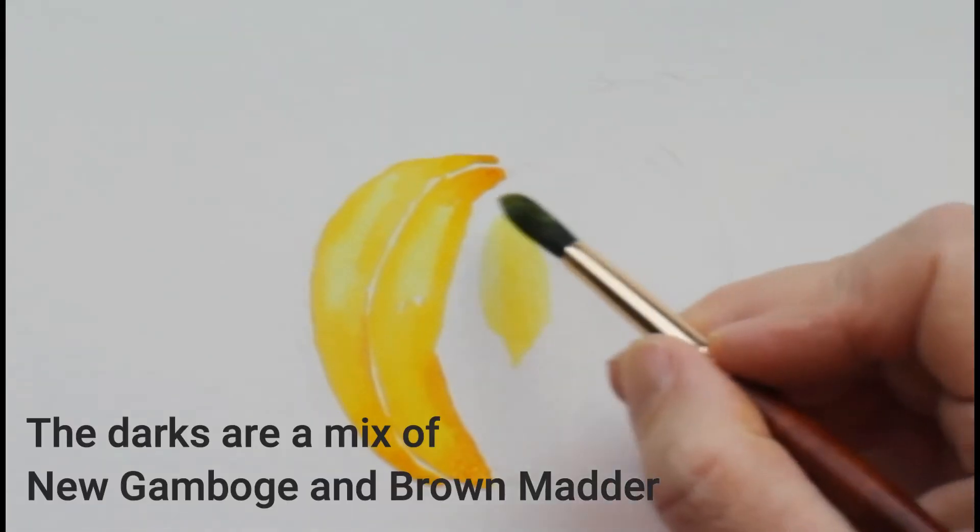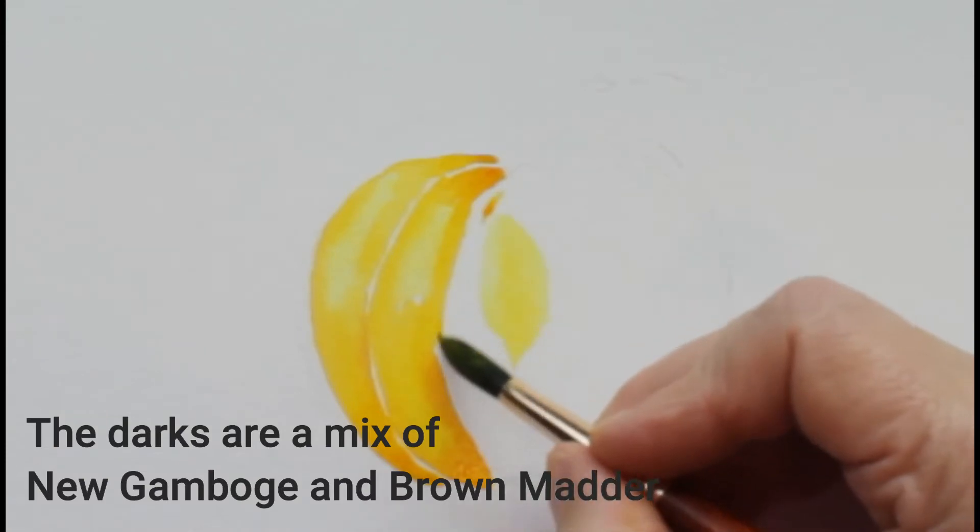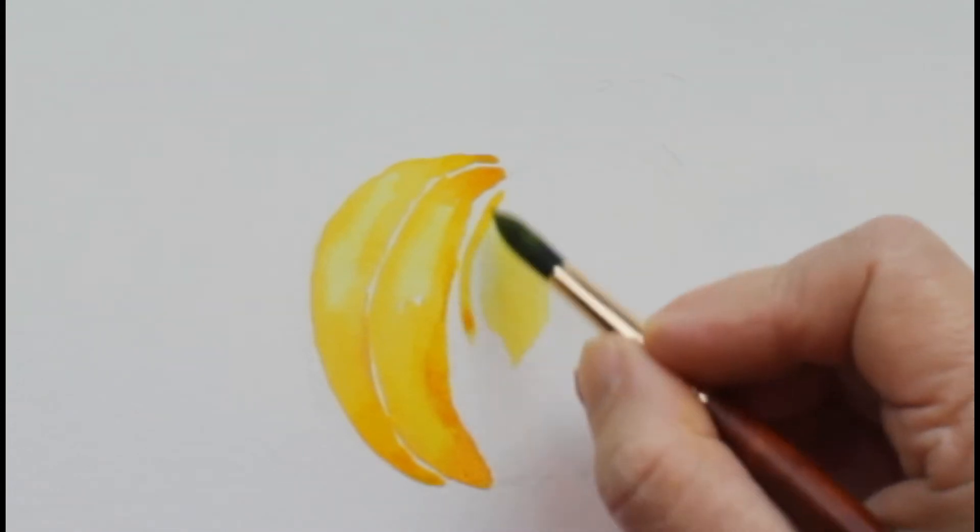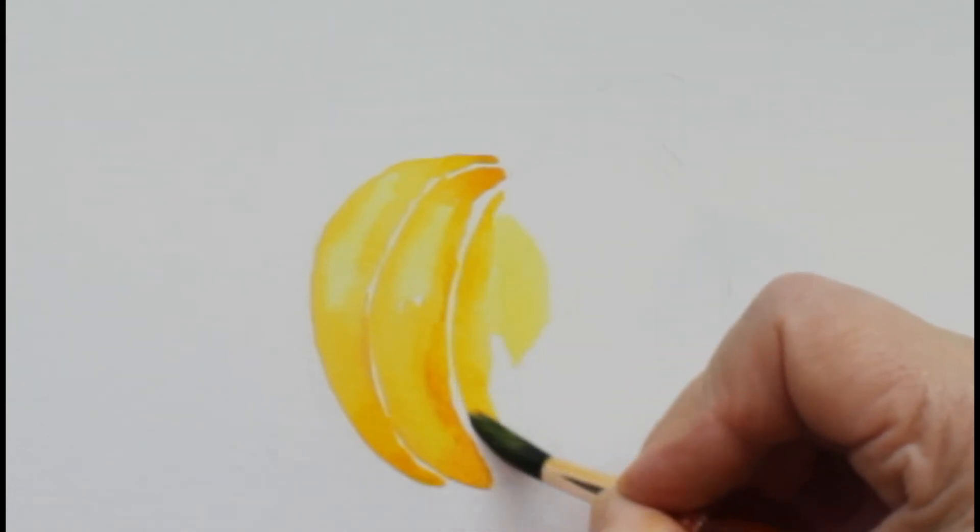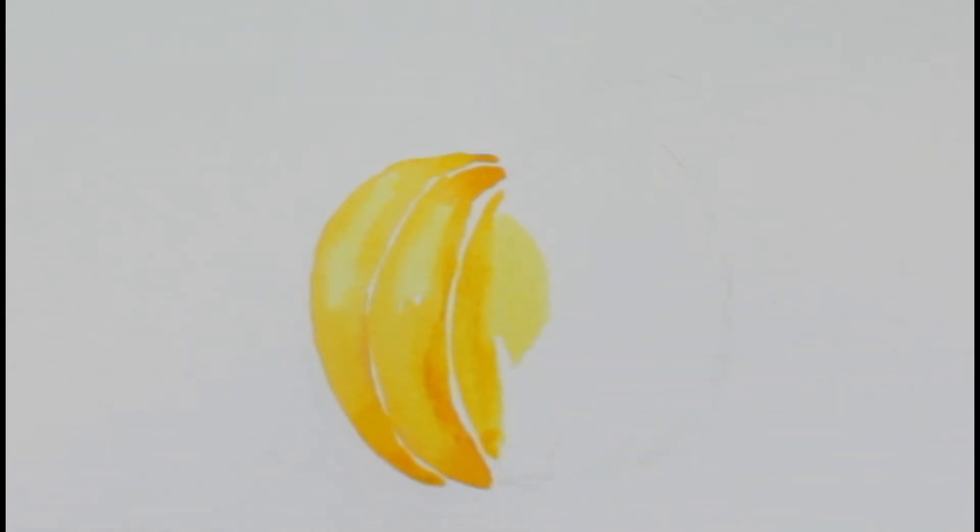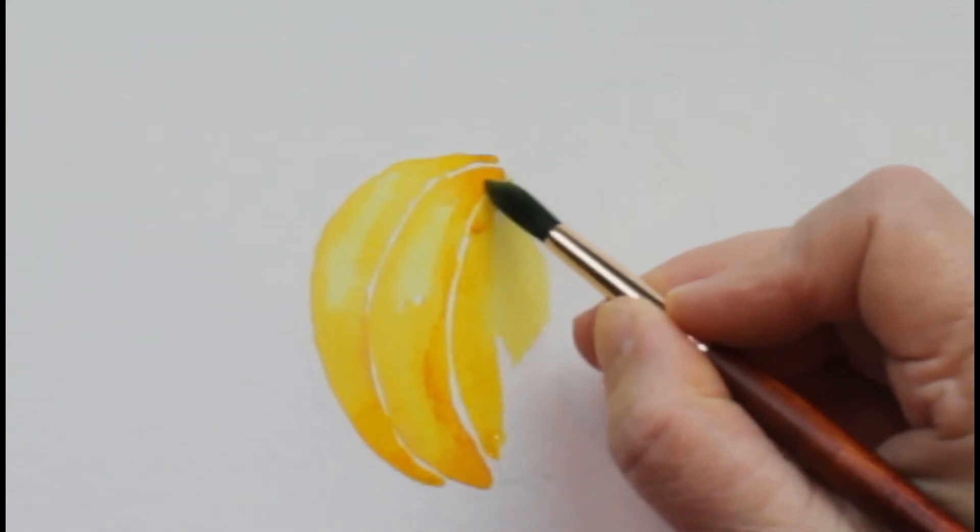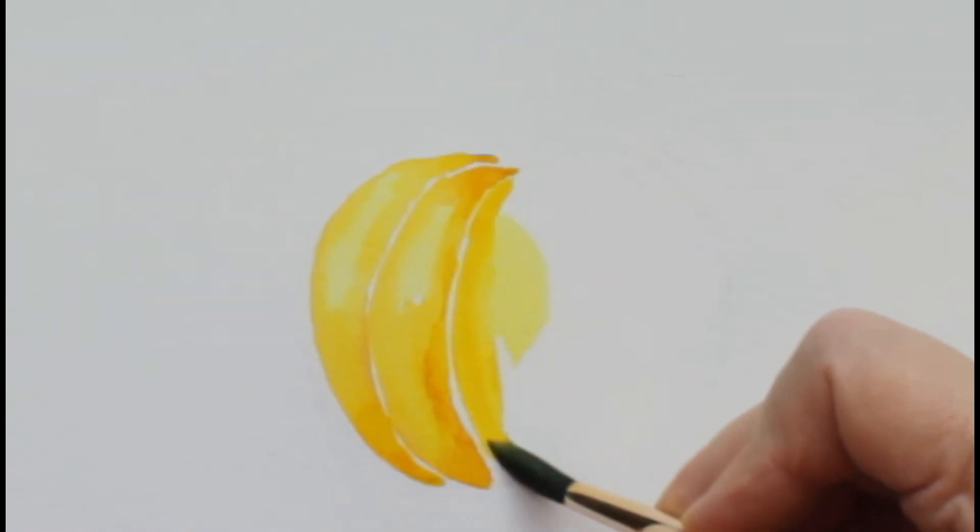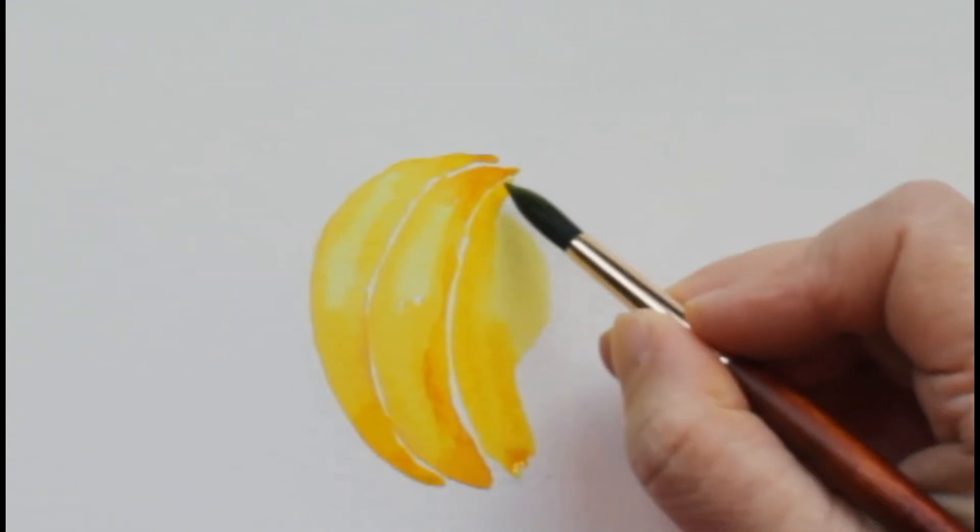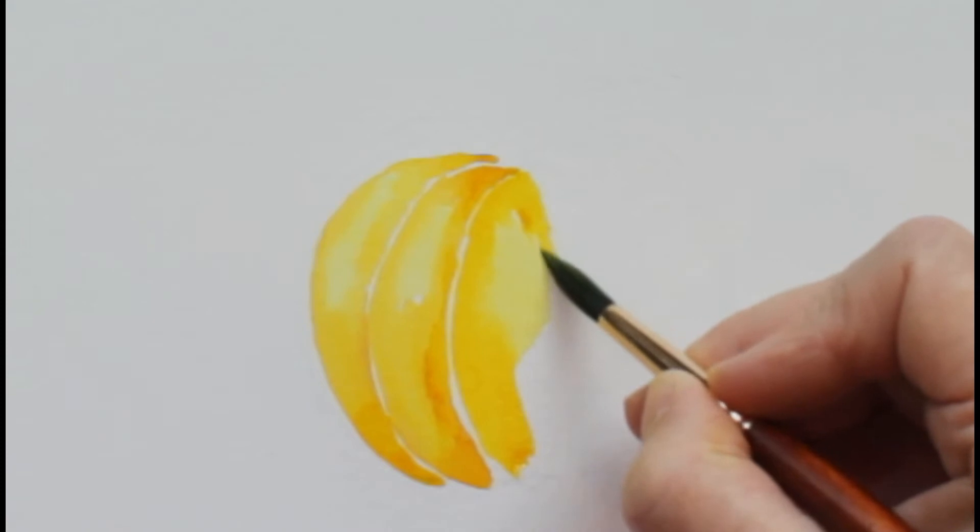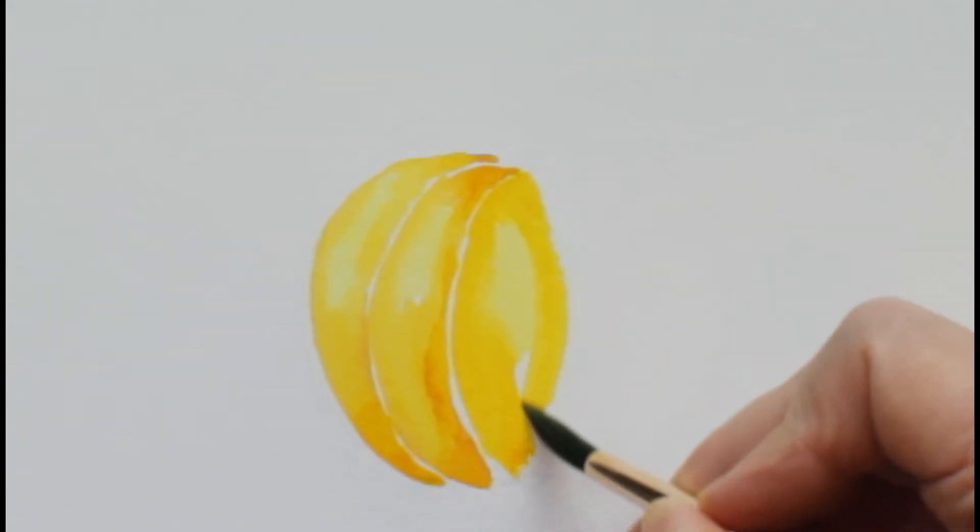You can see that there's white space in between these sections of pumpkin, and that's important. Otherwise it'll look like just one big orange round ball. Right now there's more white space than we're going to end up with, but it's important to leave a little tiny bit of white space in there to give it the correct pumpkin shape.